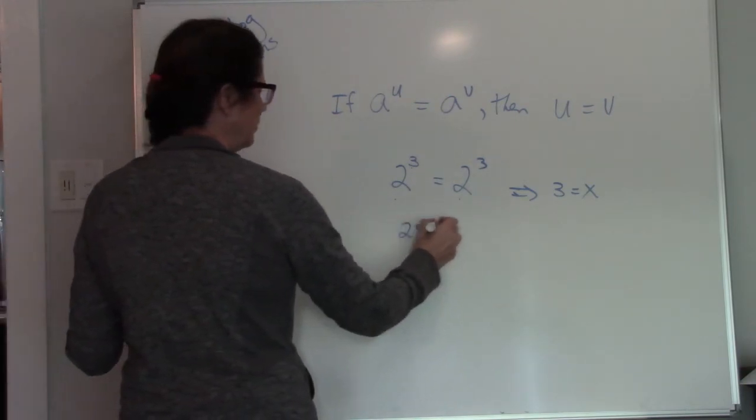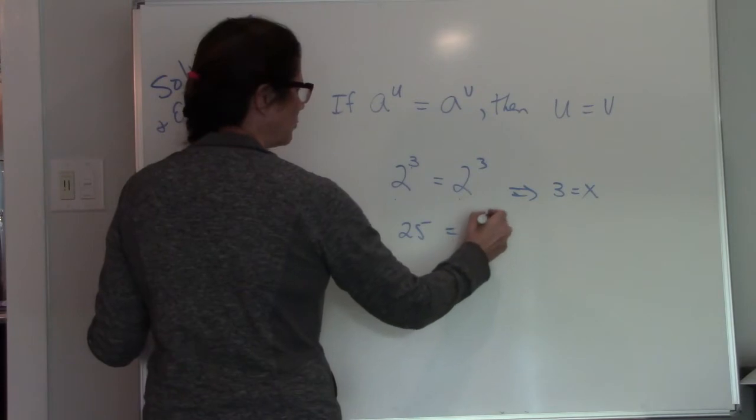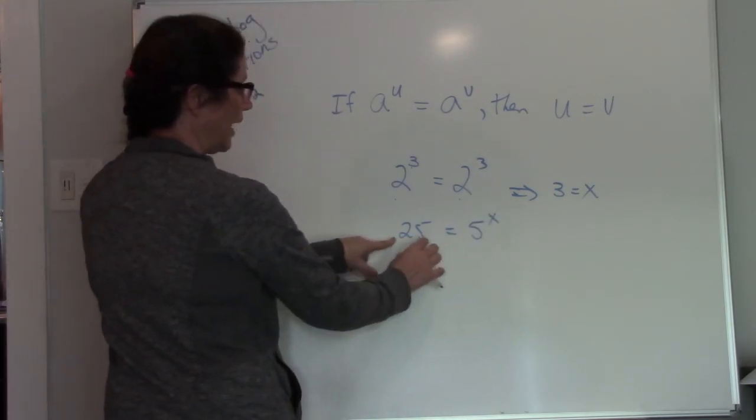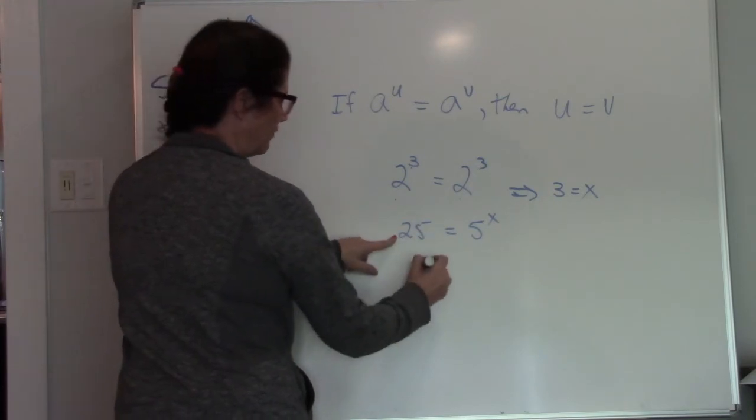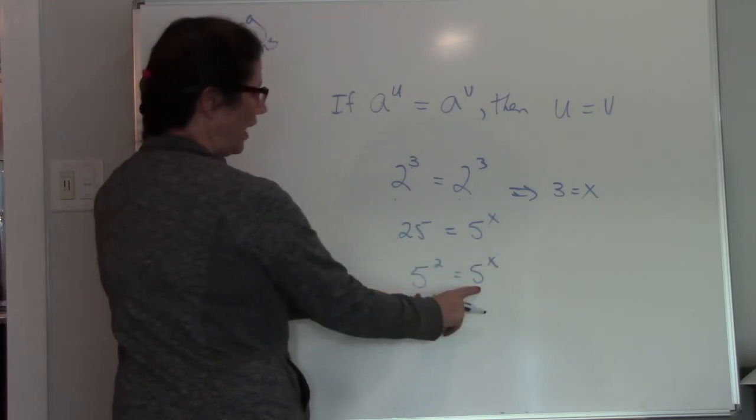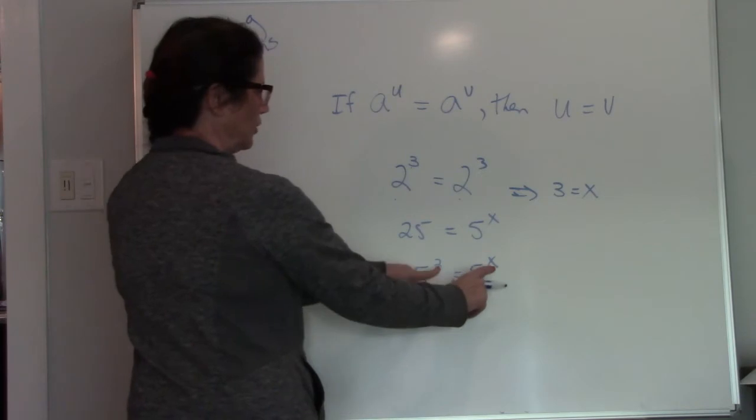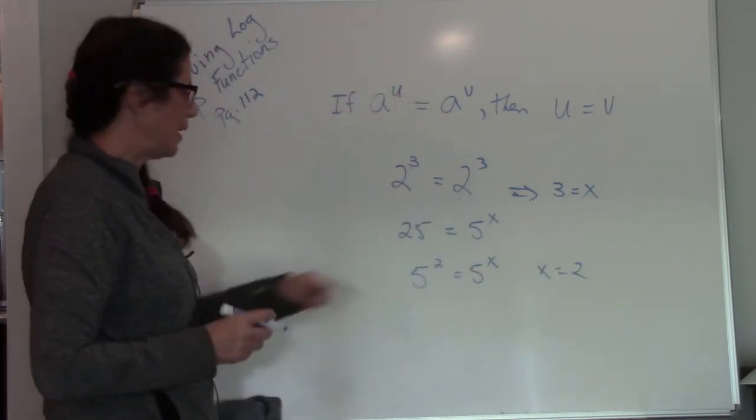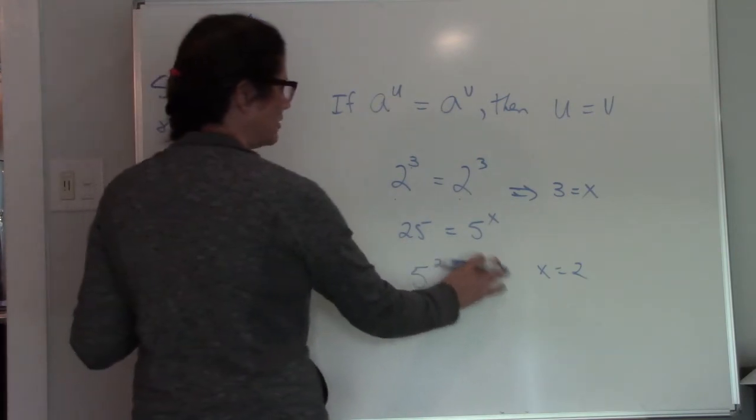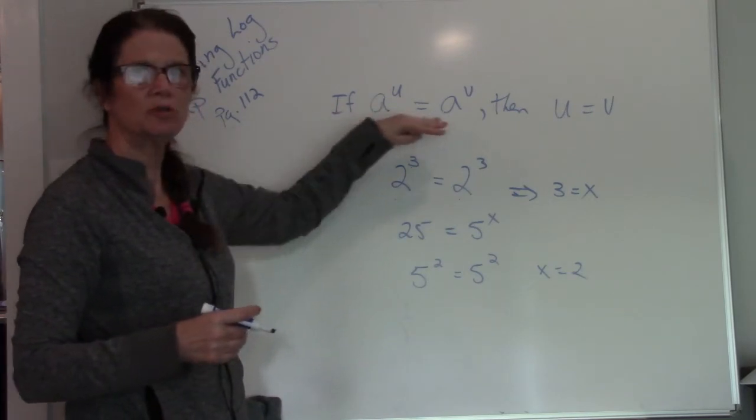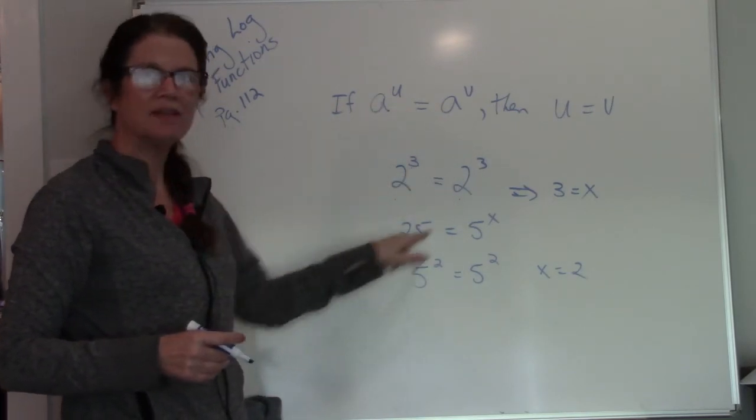If I had 25 equals 5 raised to the x power, you can see here my bases aren't the same. But I can change this to base 5 because 25 is the same as 5 to the 2nd power. So now I have the bases are the same, which tells me my exponents also have to be the same. 5 to the 2nd power is the same as 5 to the 2nd power. So we can use this rule as long as our bases are the same.